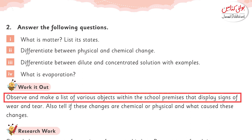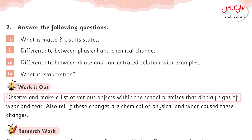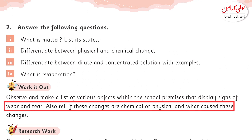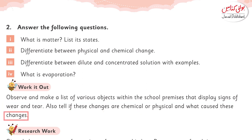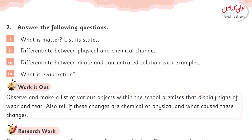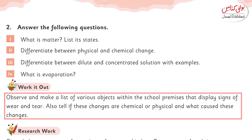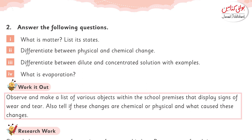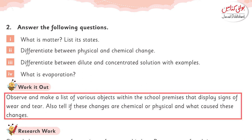Look it out — observe and make a list of various objects within the school premises that display signs of wear and tear, and also tell if these changes are chemical or physical. You have to take different objects found in the school, determine whether the changes are physical or chemical, and differentiate between them.